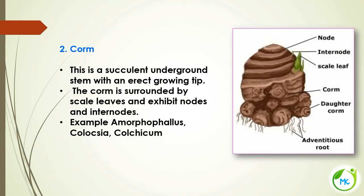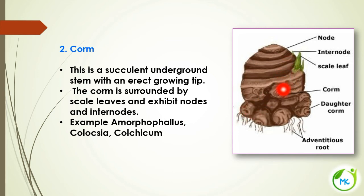The next kind of underground stem modification is corm. It is a succulent underground stem with an erect growing tip. It also has scale leaves, nodes, and internodes. Examples include Amorphophallus and Colocasia.